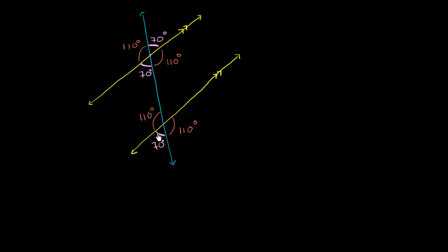And we could have also figured that out by saying this angle is supplementary to this angle right over here. And then we could use multiple arguments — the vertical angle argument, the supplementary argument, or the corresponding angle argument — to say that this must be 70 degrees as well.